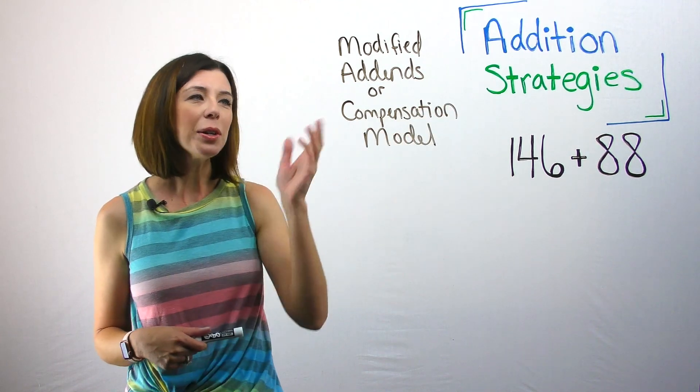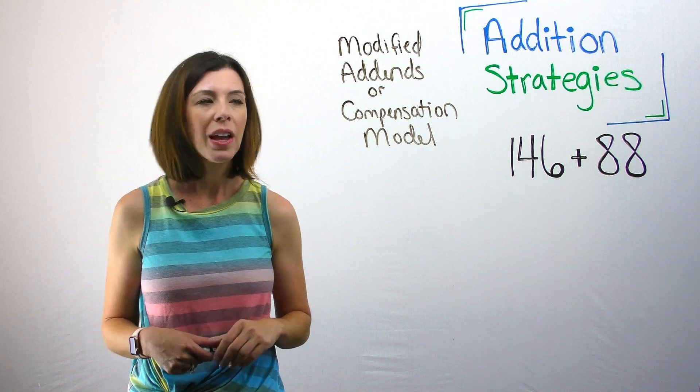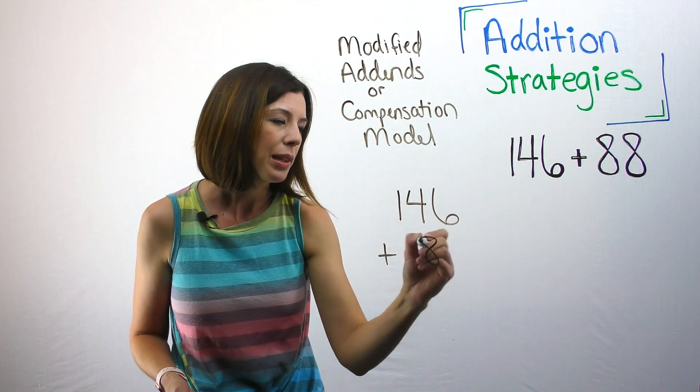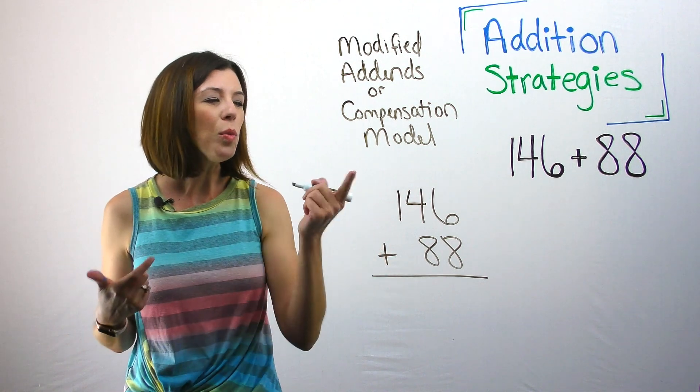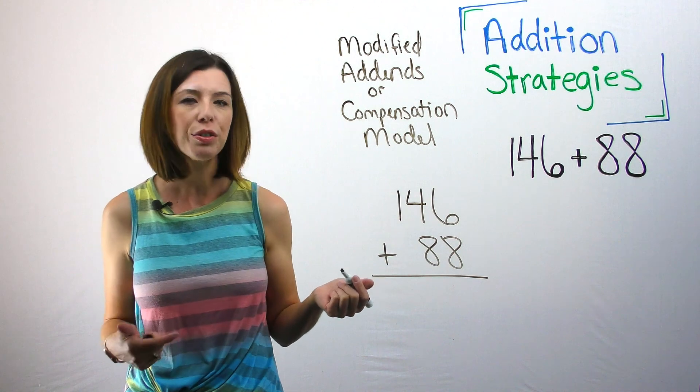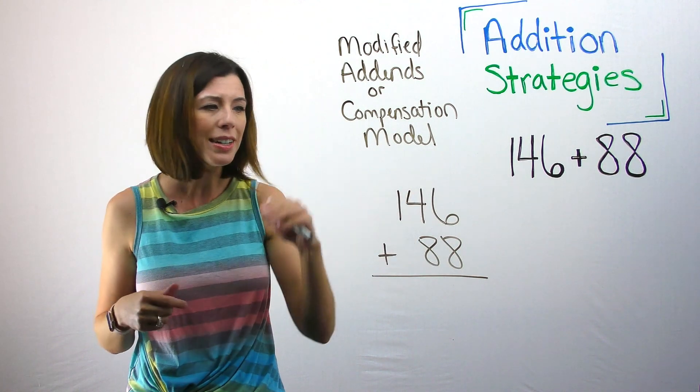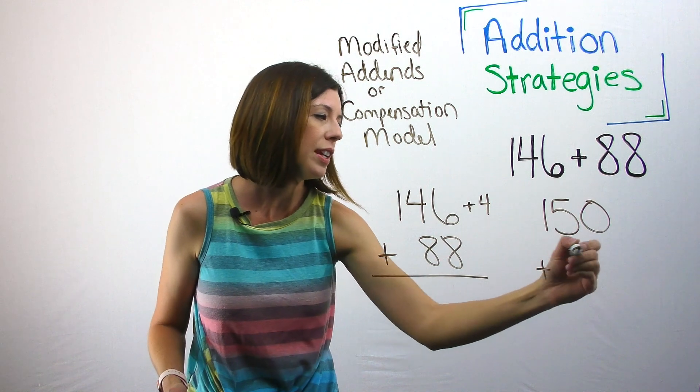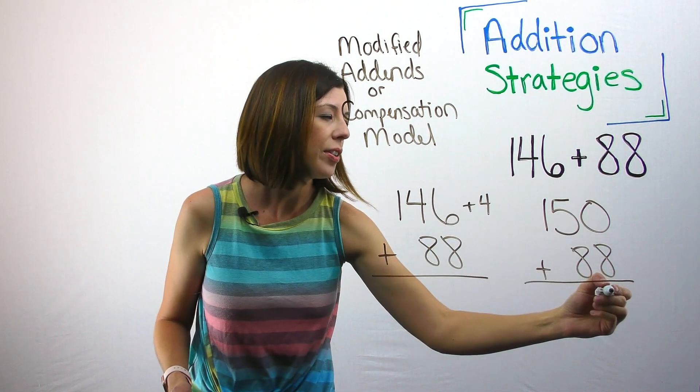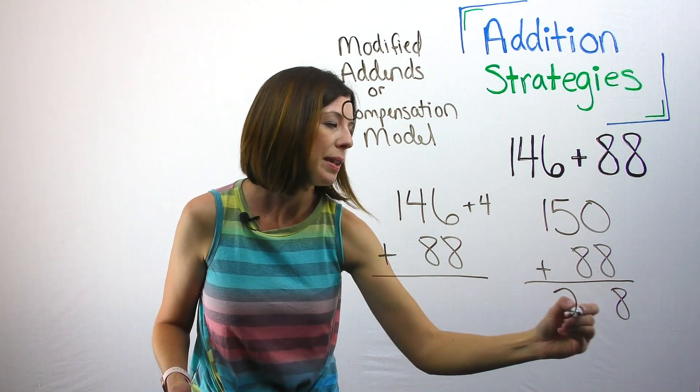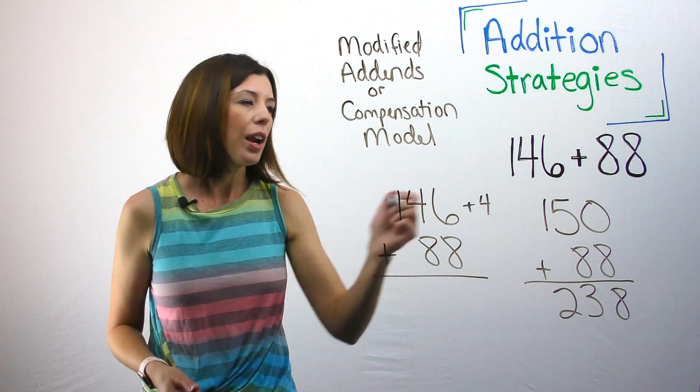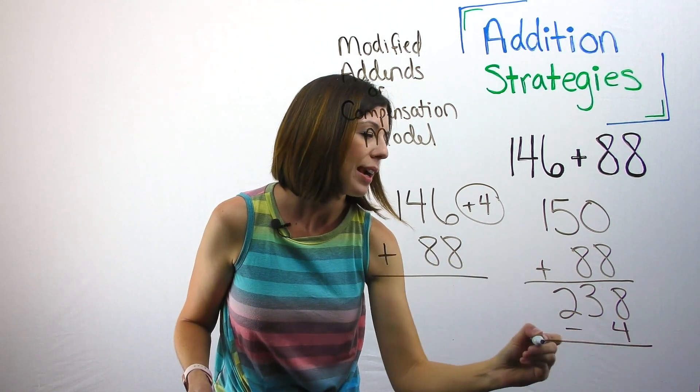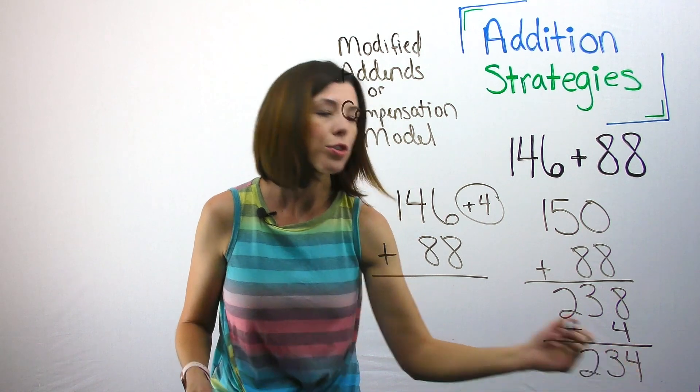The last strategy I want to show you today is called modified addends or the compensation model. For this strategy, I want to write my numbers vertically. This is just easier for me. So I'm going to write 146 plus 88. And what I'm thinking about is, hmm, I wish that this top number was a friendlier number. Like say it was 150, then I wouldn't have to carry so many times or keep regrouping, right? So let me change it. So I'm going to add four. And I now have 150 plus 88. And now I can easily add those. I have, 150 plus 80 gives me 230. So I have 238. However, remember, I added on this four. So now I need to take away that four. So I'm going to subtract it out from the end. And I get 234 for my answer.